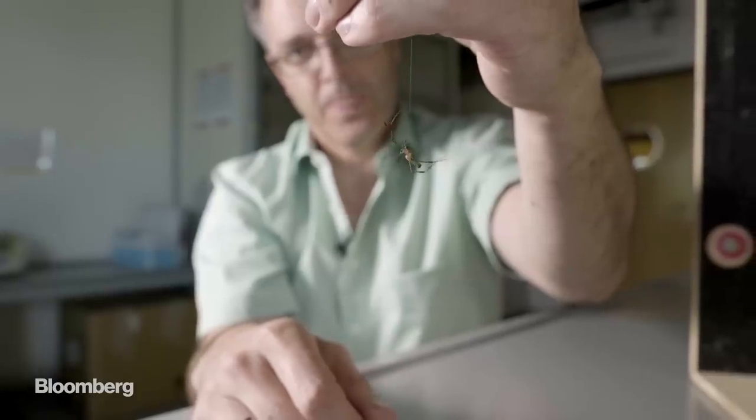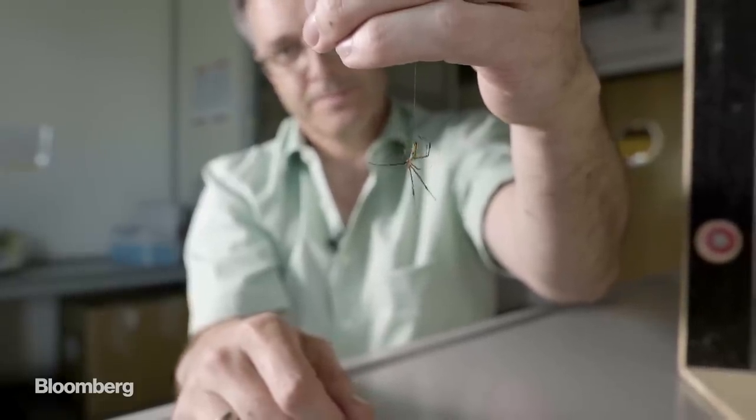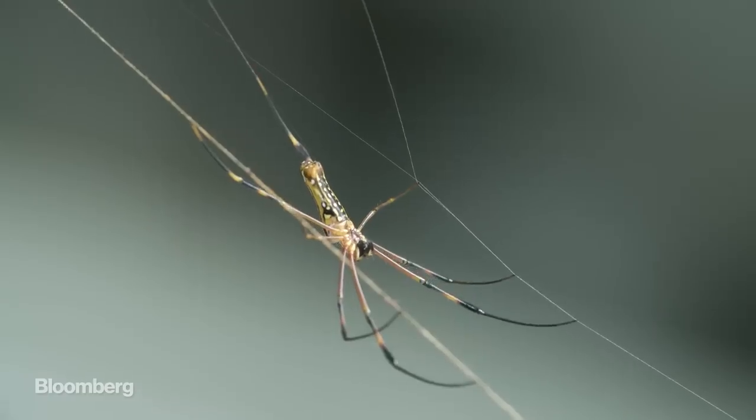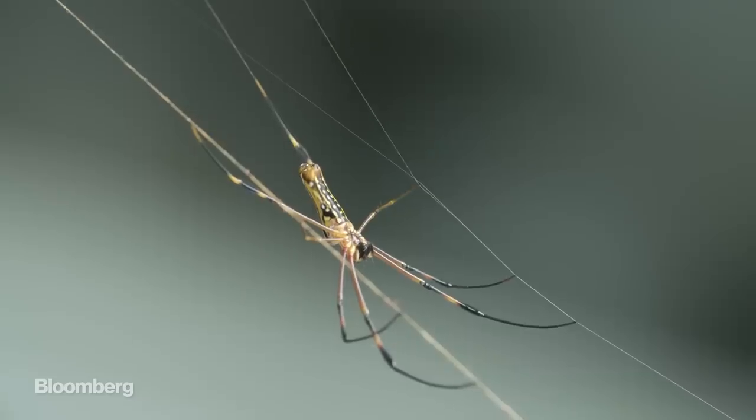The best silk producers are orb-weaving spiders. They have seven different types of silk with different properties. We find dramatic differences there concerning mechanics, but also concerning other properties.